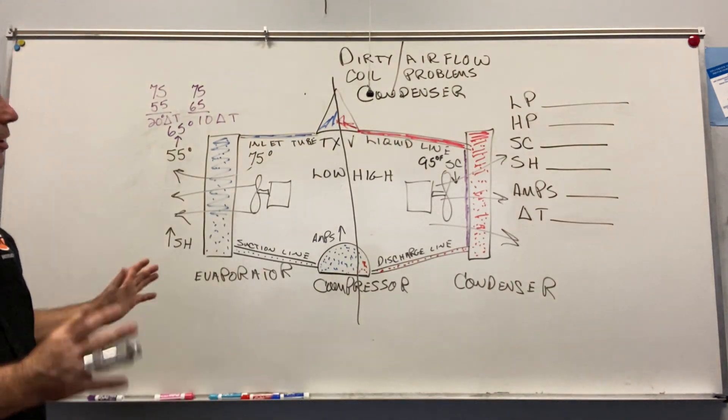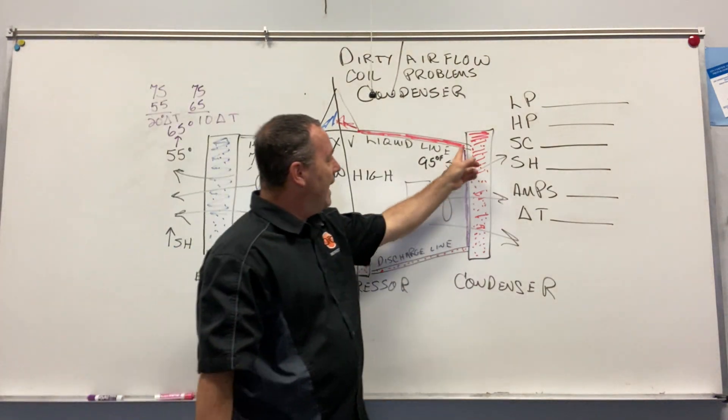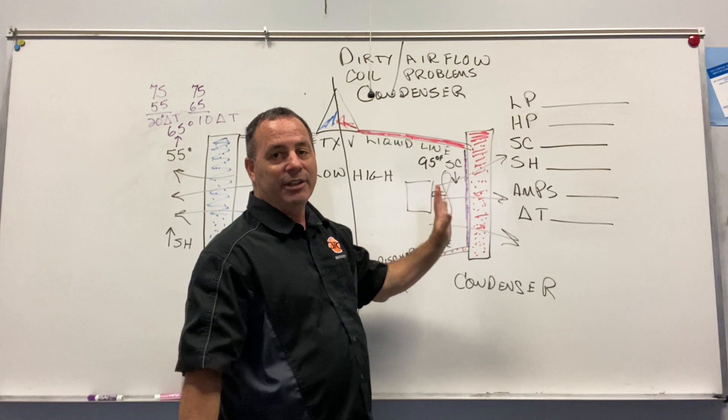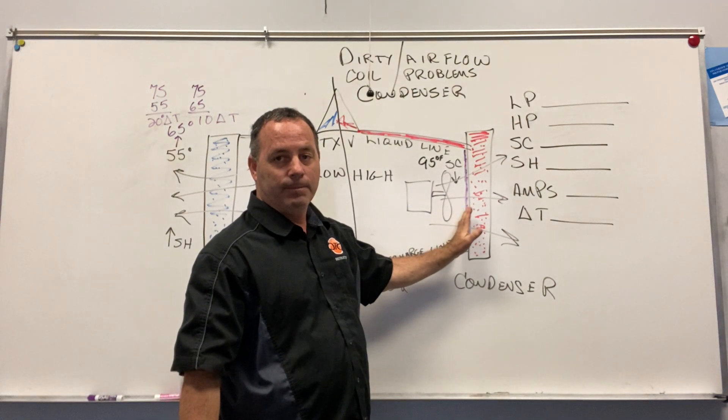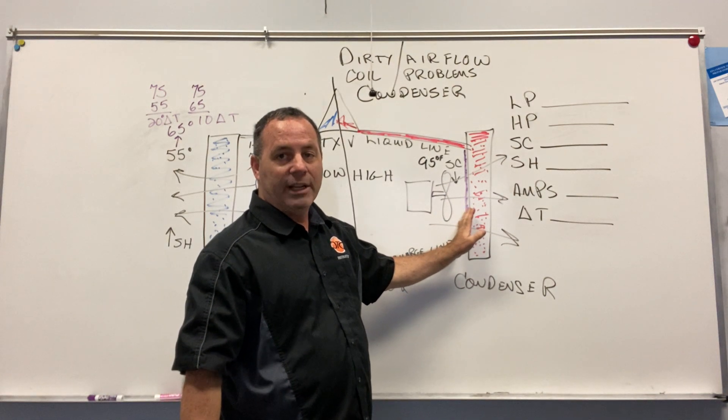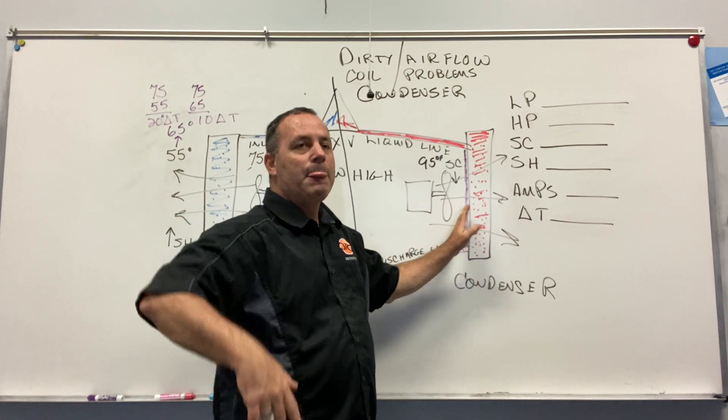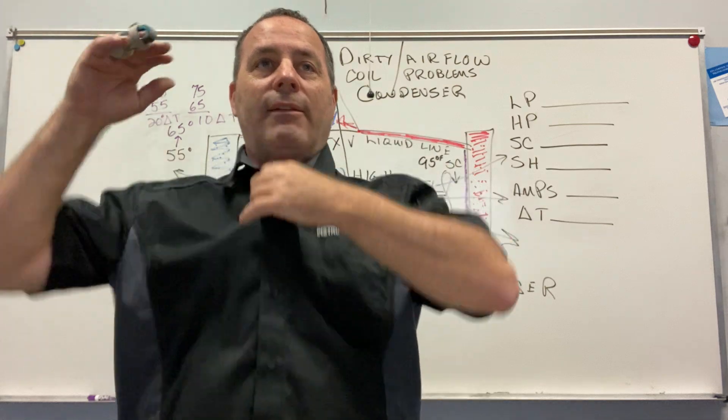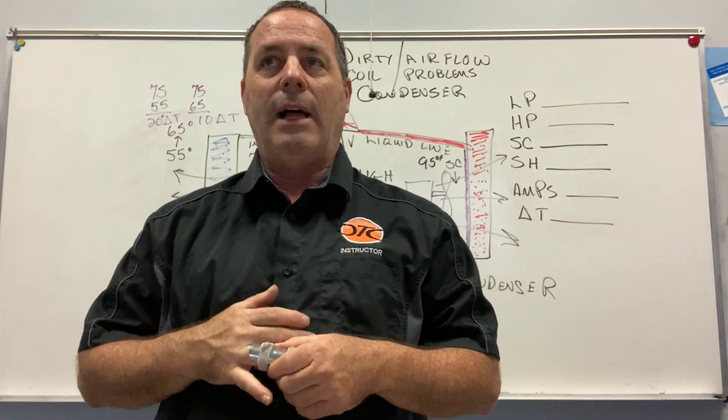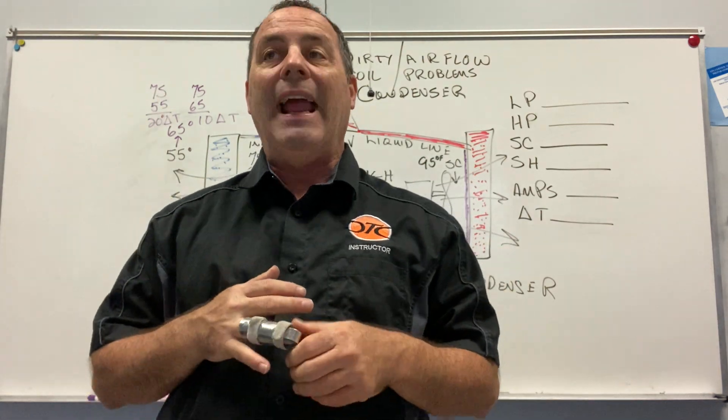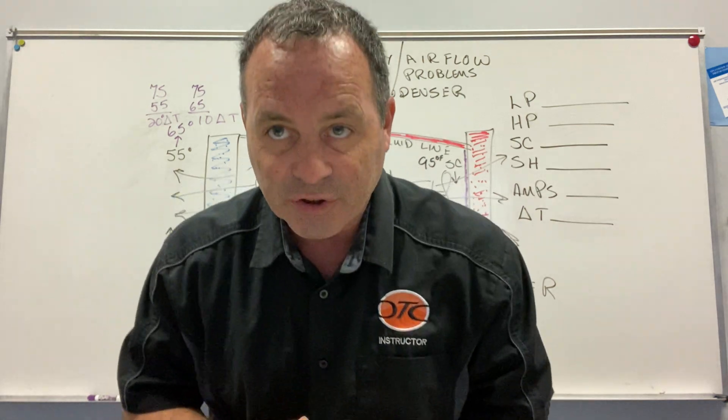All right, so first of all, you see this purple here, we have a dirty condenser coil. Now what's that going to do to your capacity to cool? It'll lower it. By lowering your capacity to cool, you'll have a longer run time to try to cool a house if it does it at all. And that's costing you money and electricity.